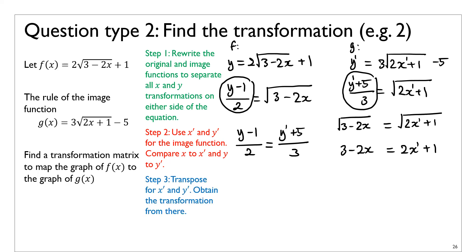That's step 2. Step 3 is transposing. The main difference from the previous question type is that here you're transposing for x-prime and y-prime, because you're trying to express x-prime in terms of x and y-prime in terms of y, so you can figure out what the transformation is to go from x to x-prime and y to y-prime. So I'm going to make y-prime the subject: move the 3 first, giving (3/2)(y − 1) = y′ + 5.